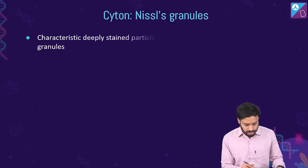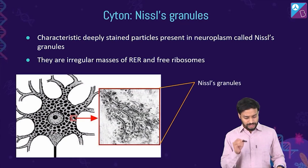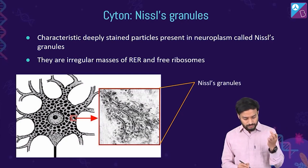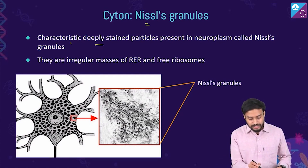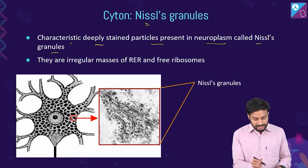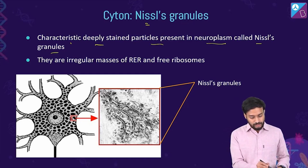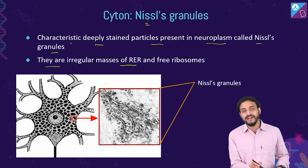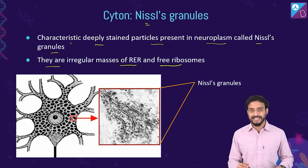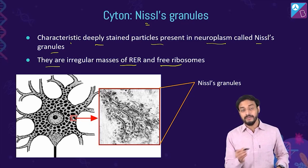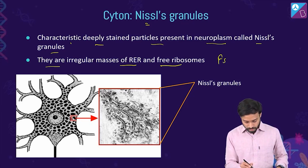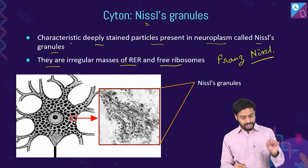Nissl's granules are deeply stained particles present in the neuroplasm. They are irregular masses of rough endoplasmic reticulum and free ribosomes, easily visible when stained. They are named after their discoverer, Franz Nissl.